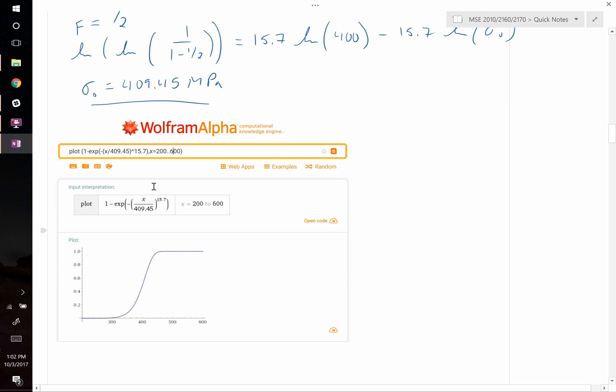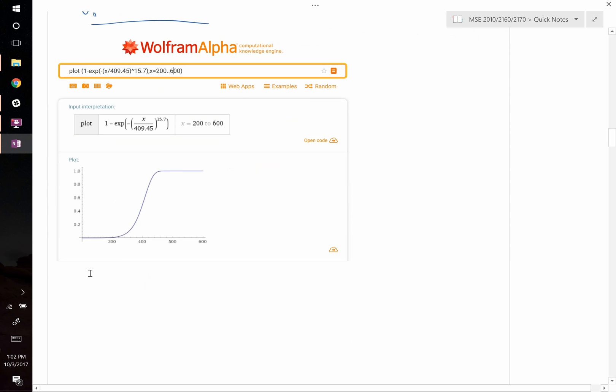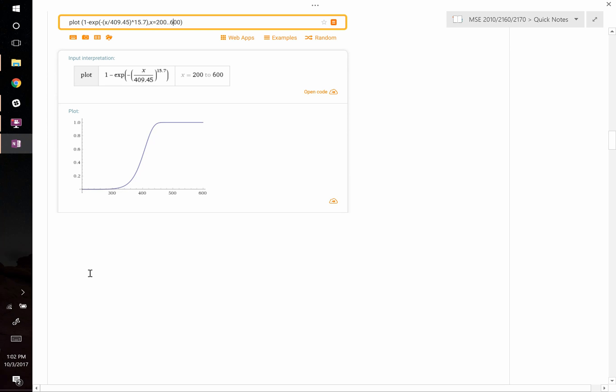Now that we have this characteristic strength, we can go ahead and figure out what will be the stress corresponding to 99.999% survival rate. In that case, the failure rate is equal to 5 samples or 5 parts out of 500,000.